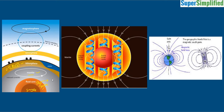The outer core is in molten form — liquid, semi-liquid — so this is a fluid core and the metals present are iron and nickel. Iron and nickel are in the fluid state in the outer core.